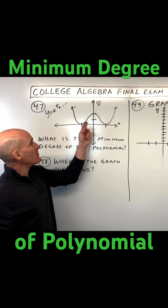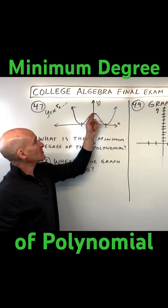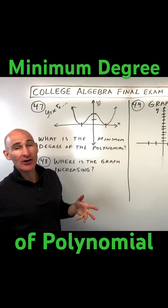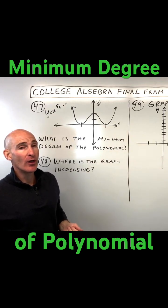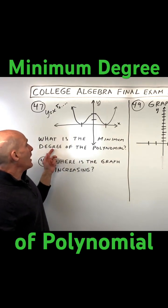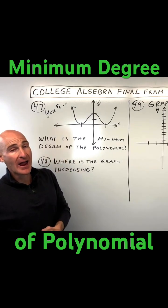So in this case, you can see that the graph is turning one, two, three times. That tells us that the degree of the polynomial would have to be four or higher.